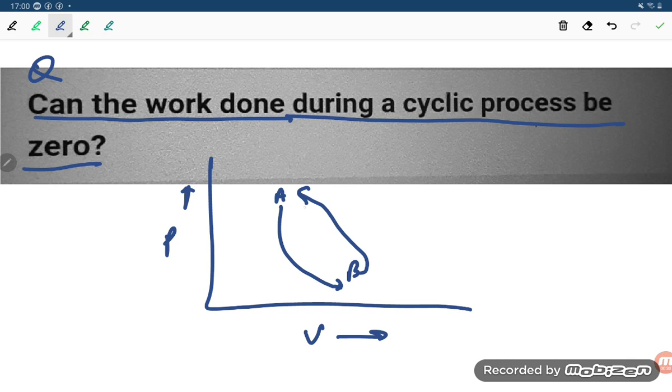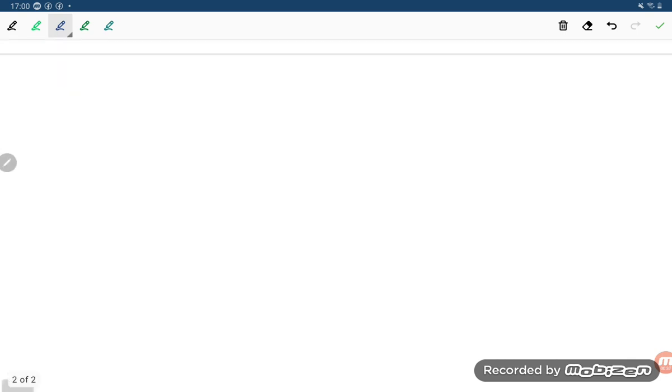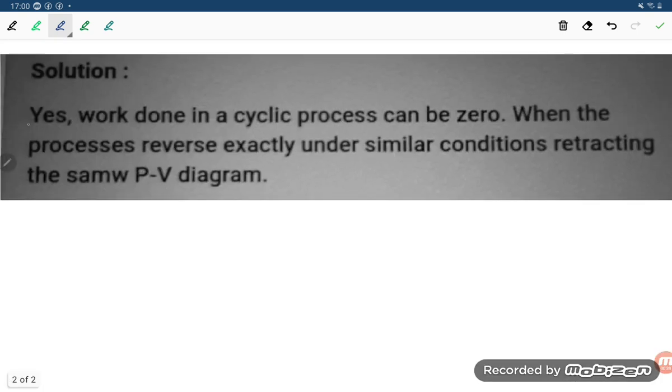So work done can be zero because how much distance is traveled, the same weight is returning back, so that will be zero. Here you can have a look over the slides. Yes, work done in a cyclic process can be zero when the process reverses exactly under similar conditions.